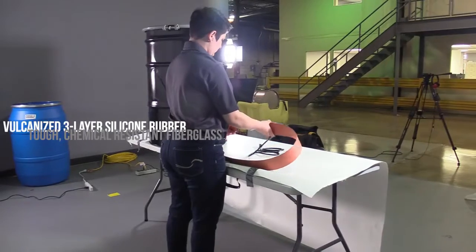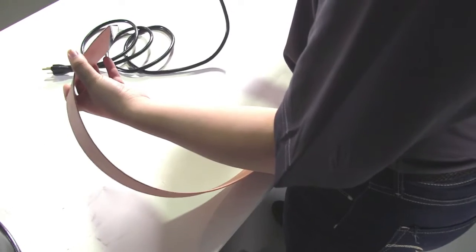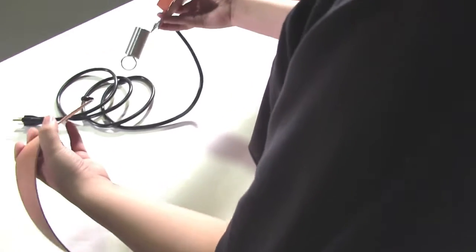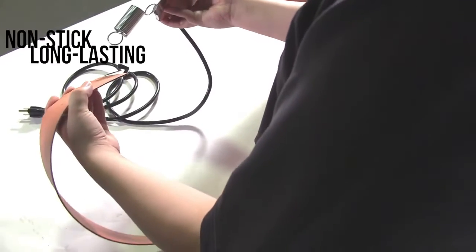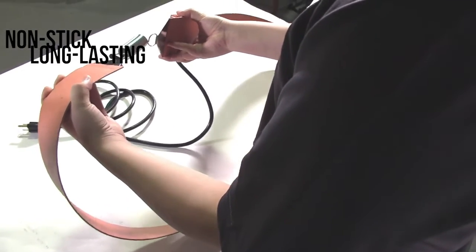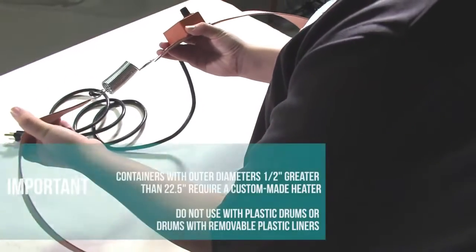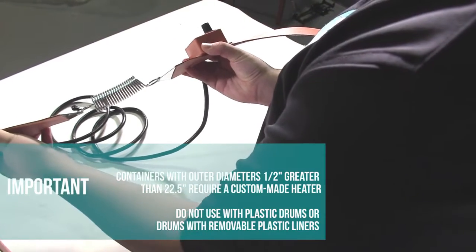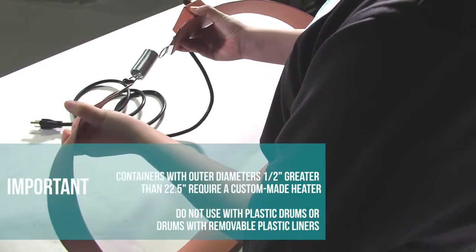Its vulcanized three-layer silicone rubber construction is reinforced with fiberglass to make it tough, long-lasting, and resistant to a wide range of chemicals. It is 64 inches long and three inches wide. For faster heating you can always add more heaters to the drum.